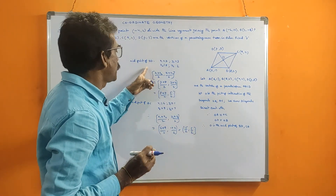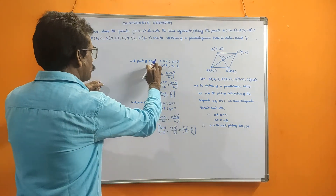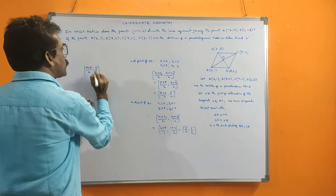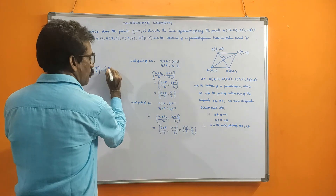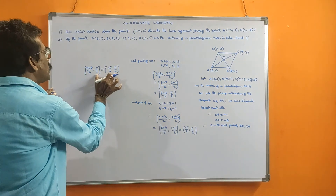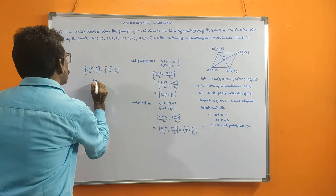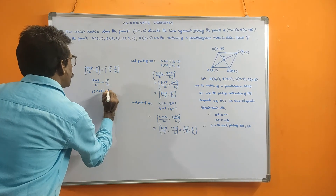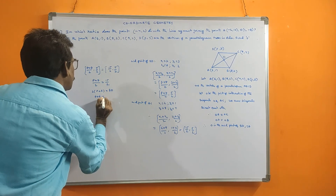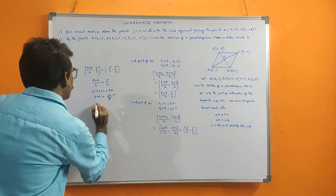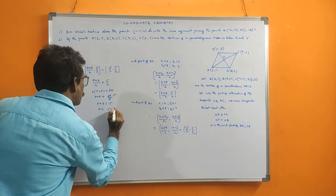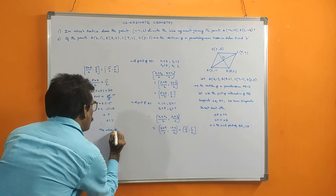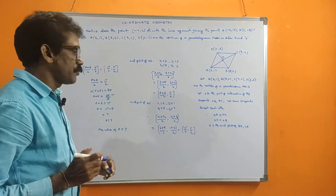The midpoint of AC is (15/2, 5/2) and the midpoint of BD is ((P+8)/2, 5/2). Both are equal to O, so we equate them. The y-coordinates are already equal (5/2 = 5/2). For the x-coordinates: P plus 8 by 2 equals 15 by 2. Cross-multiplying: 2 into (P+8) equals 2 times 15, so P plus 8 equals 15, giving P equals 7. Therefore, the value of P is equal to 7.